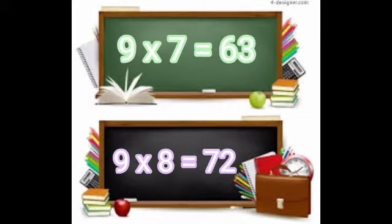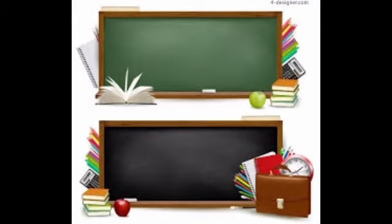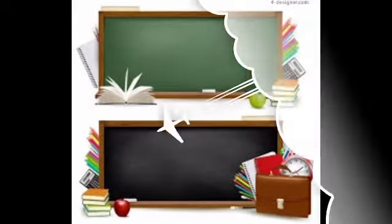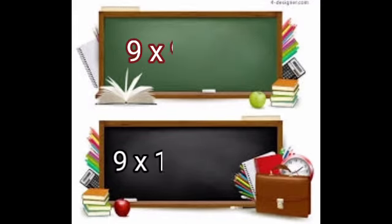Nine sevens are sixty-three. Nine eights are seventy-two.